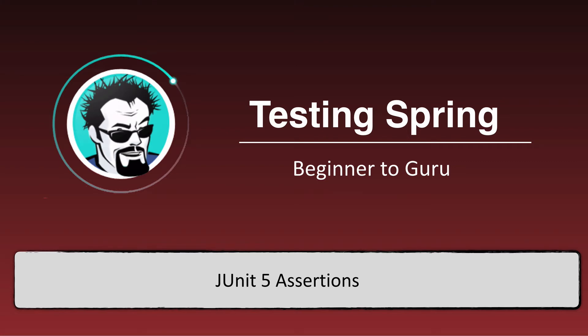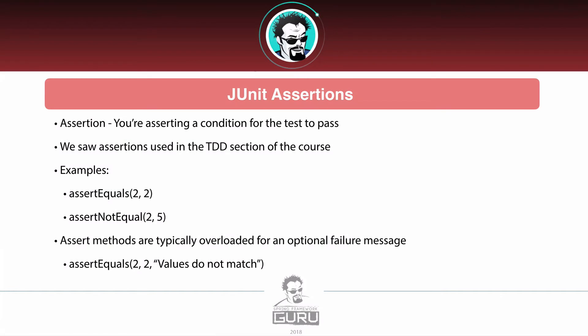In this video, we are going to be taking a look at JUnit 5 assertions. Assertions are something where you say, I'm asserting this condition must be true for the test to pass. There are a variety of ways to look at different attributes in the programming environment, and there are actually a lot of different ways to do assertions, and we'll see some examples coming up.